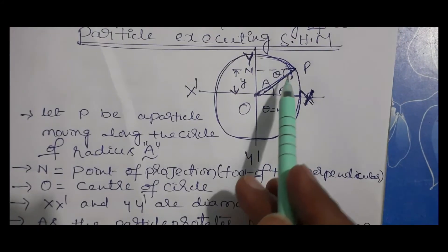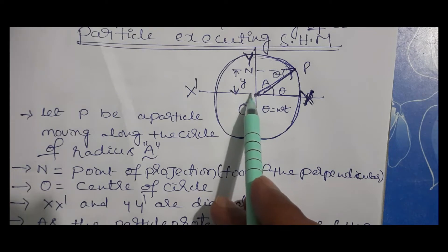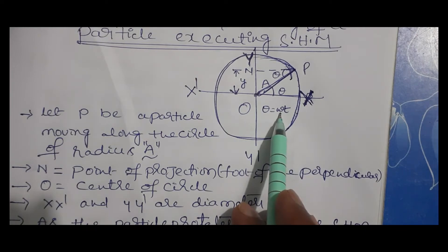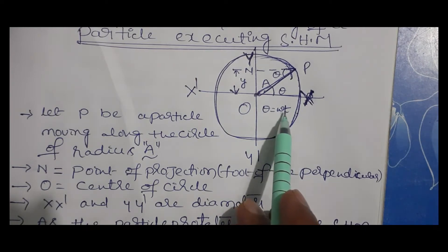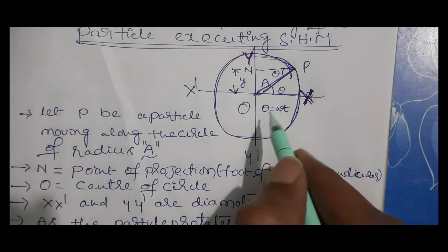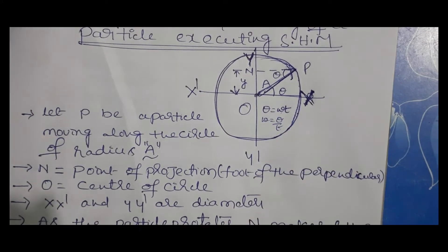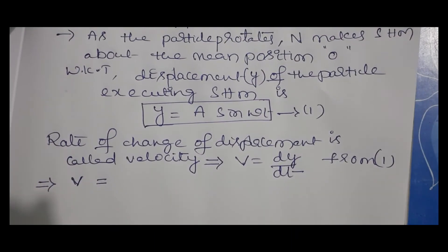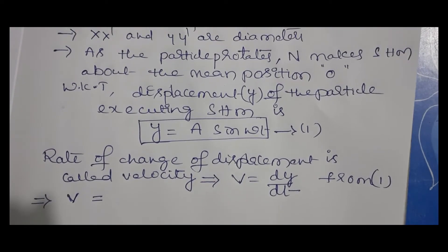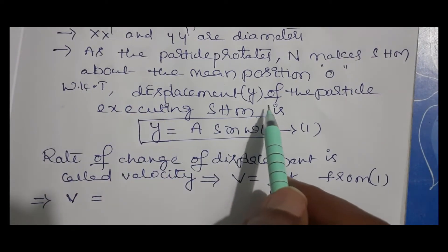From the figure, y is the linear displacement and theta is the angular displacement. We know that angular velocity omega equals angular displacement divided by time, so angular displacement theta equals omega times t. Now we are going to derive the formula for velocity of a particle executing simple harmonic motion.